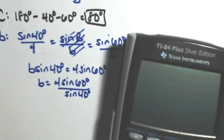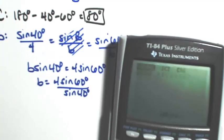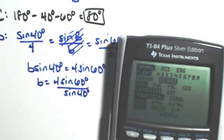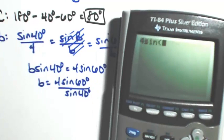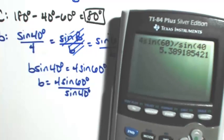Solving for b, we have 4 sine 60 degrees over sine 40 degrees. That's the exact answer. Let's get an approximation. First, I'll make sure my calculator is in degree mode, which it is. So 4 sine 60 divided by sine 40, rounding to two decimal places, gives us about 5.39.